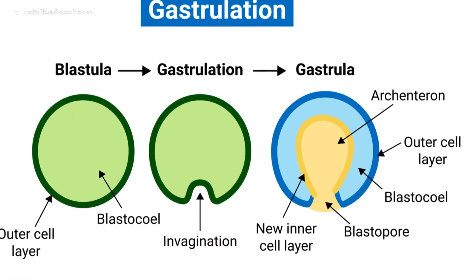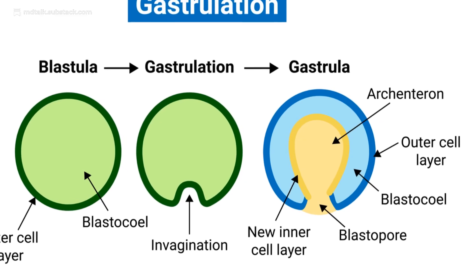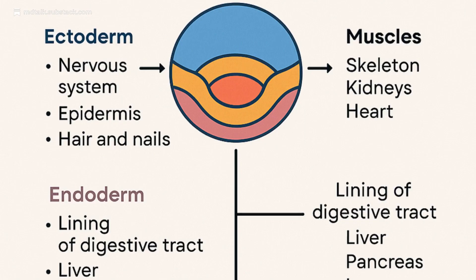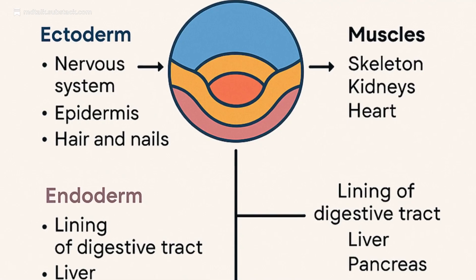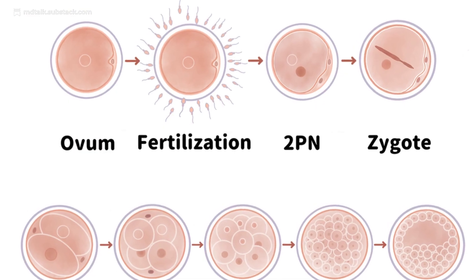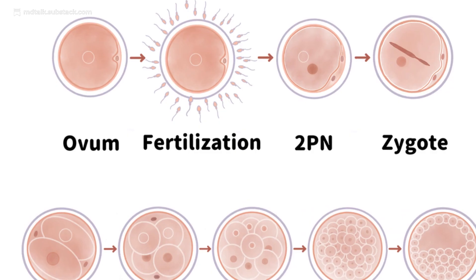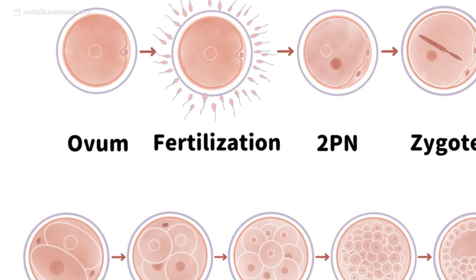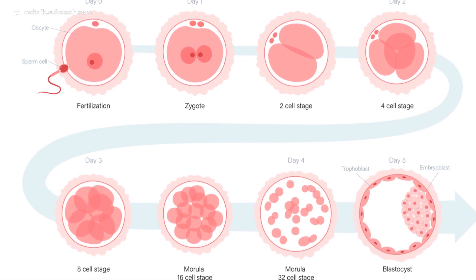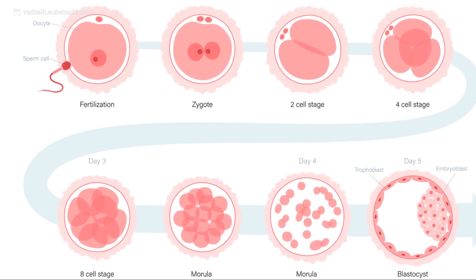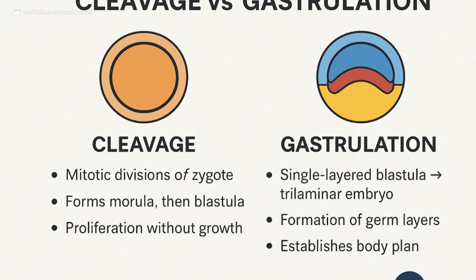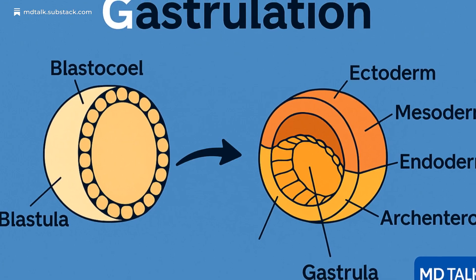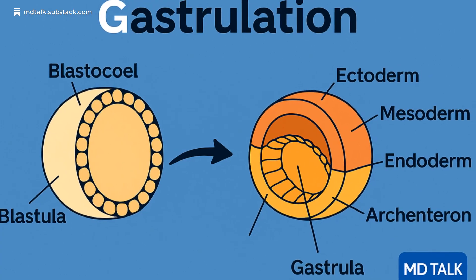This is followed by gastrulation, a dramatic morphogenetic event where cells migrate, invaginate and reorganize, forming the ectoderm, mesoderm and endoderm. Cleavage precedes gastrulation patterns, and together they set the stage for the human body's architecture.